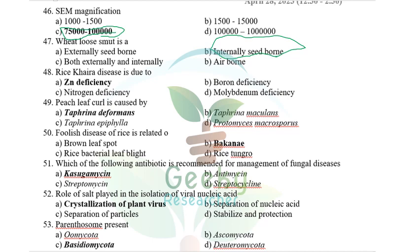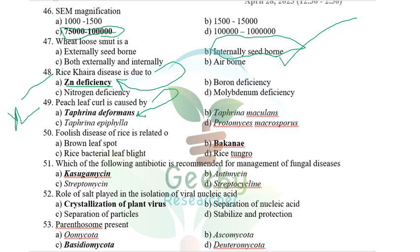Wheat loose smut and barley loose smut are among the very few internally seedborne pathogens. Rice Khaira disease is caused by zinc deficiency — first reported by Y.L. Nene in 1971. Peach leaf curl is caused by Taphrina deformans. Other options — Taphrina maculans, Taphrina fifiyla, Protomyces macrosporus — were given but the answer is Taphrina deformans.